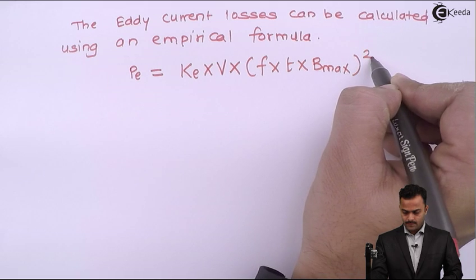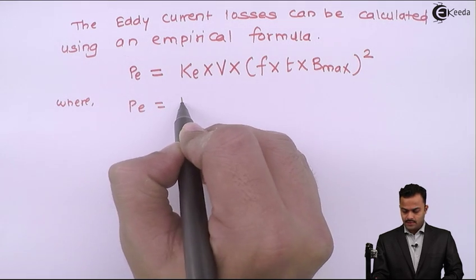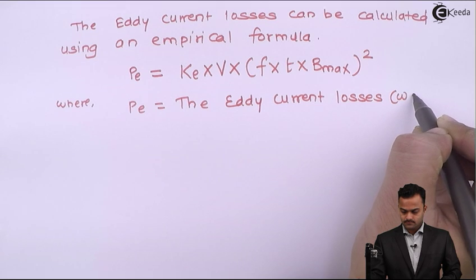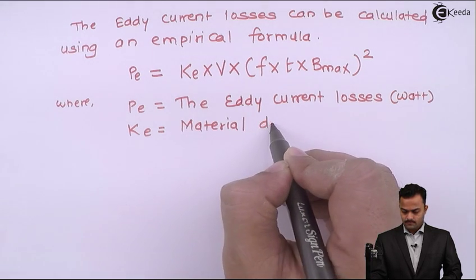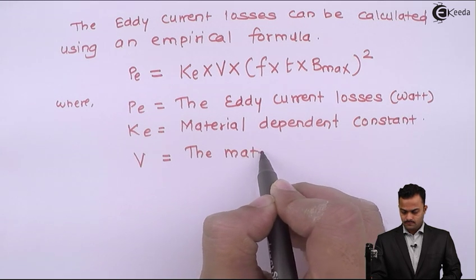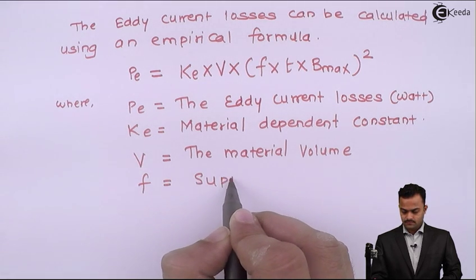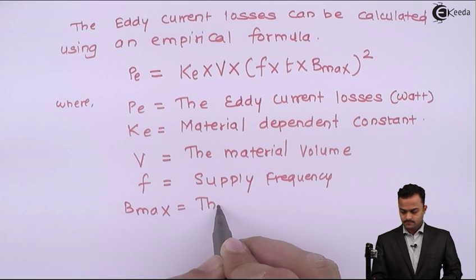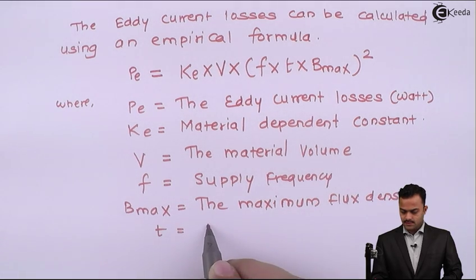The eddy current loss unit is watt. Ke is material-dependent constant. V is material volume. f is supply frequency. Bmax is maximum flux density, and t is lamination thickness.